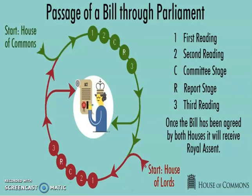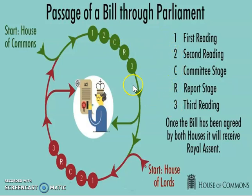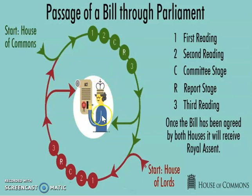We're now going to look at how a bill makes its way through parliament. Most bills start in the House of Commons and go through these stages: first reading, second reading, committee stage, report stage, and third reading. They are then passed to the House of Lords where they go through the exact same stages again — first reading, second reading, committee stage, report stage, and third reading — before being given the royal assent and becoming an act of parliament. A bill can start in either house, but whichever house it starts in, it must be passed to the other house to go through the same legislative process.